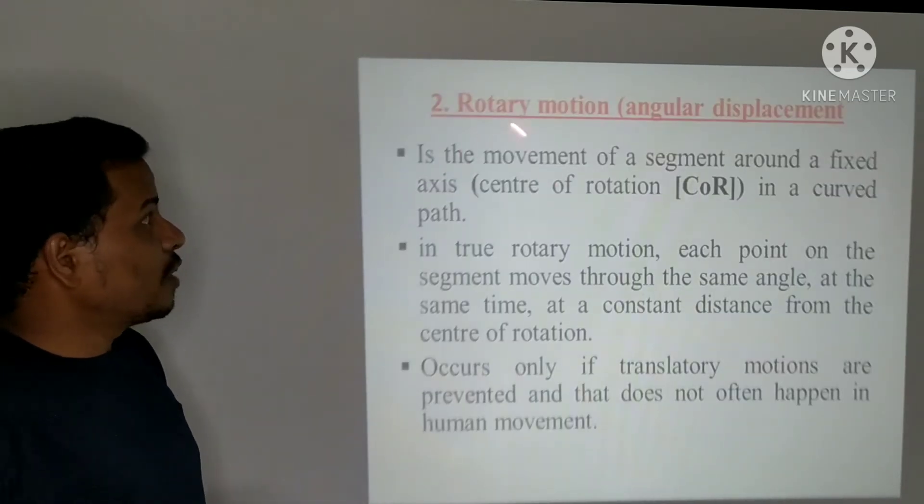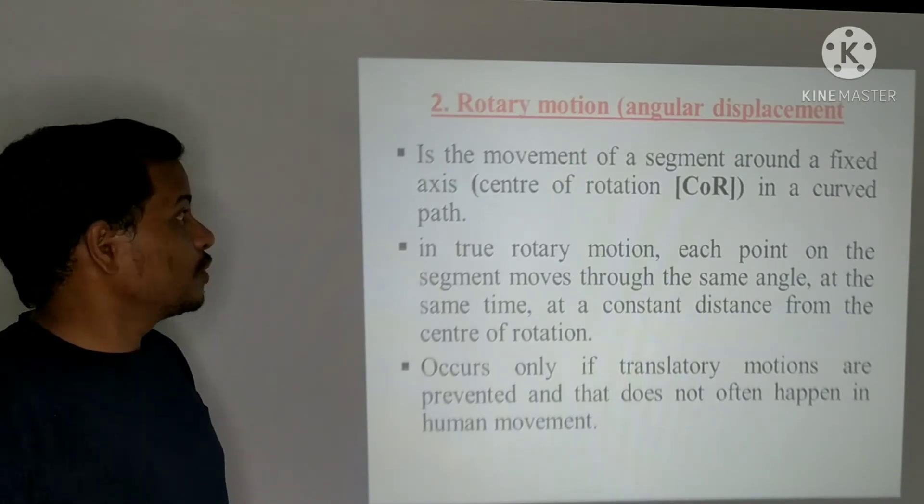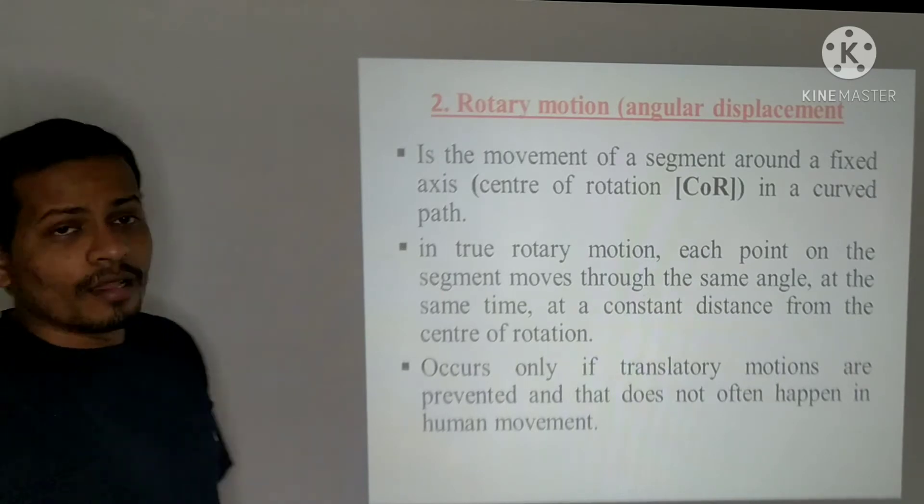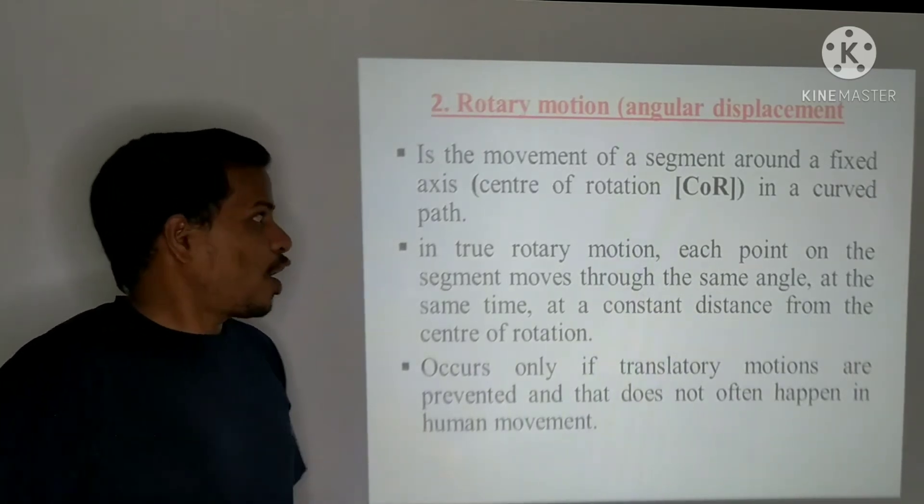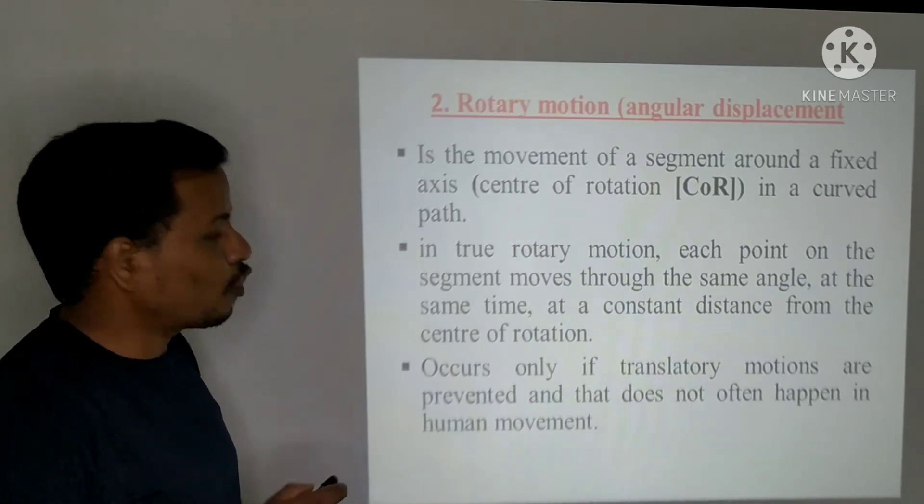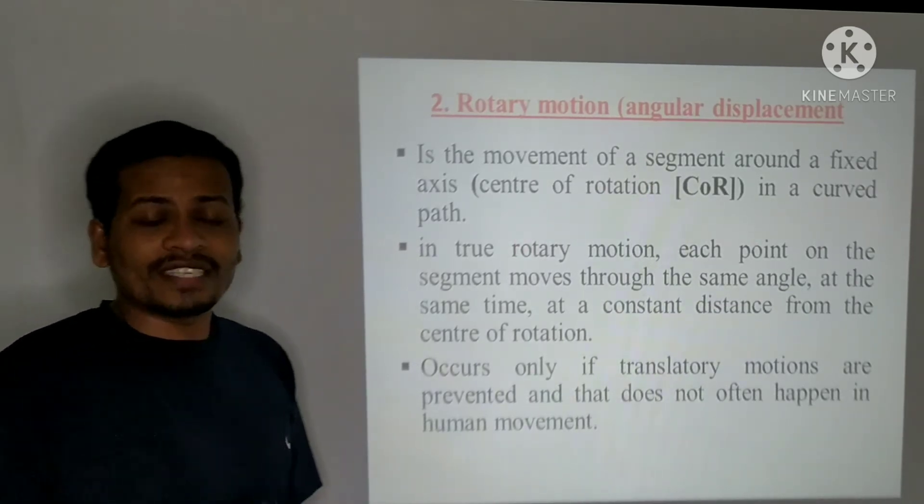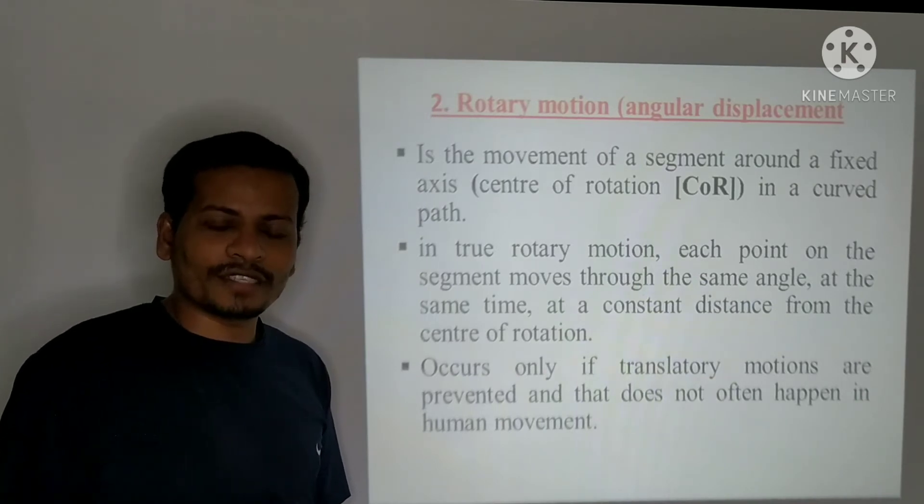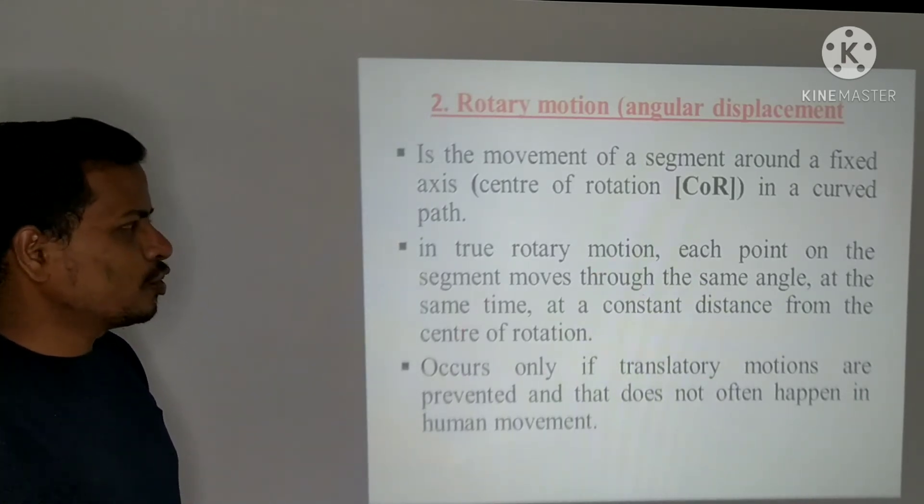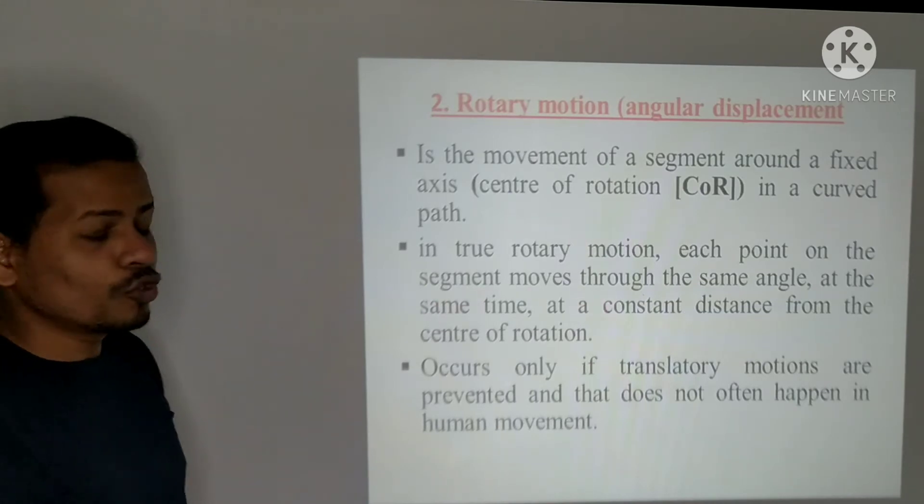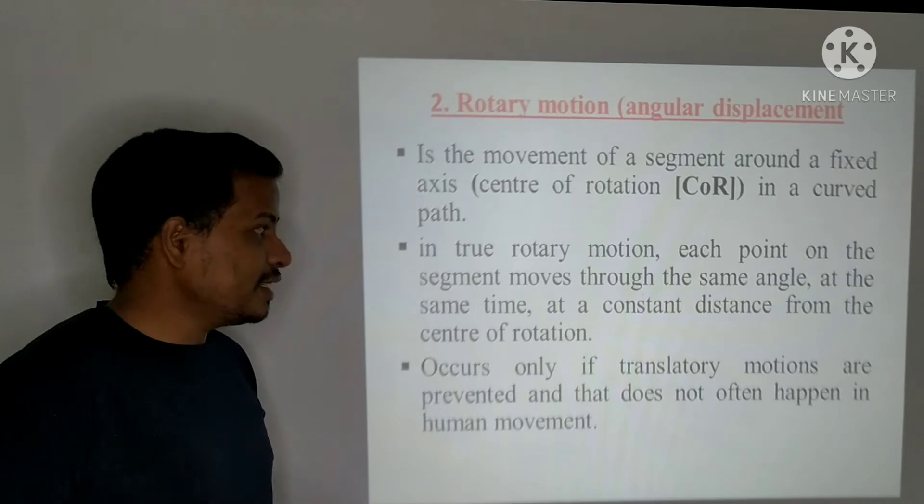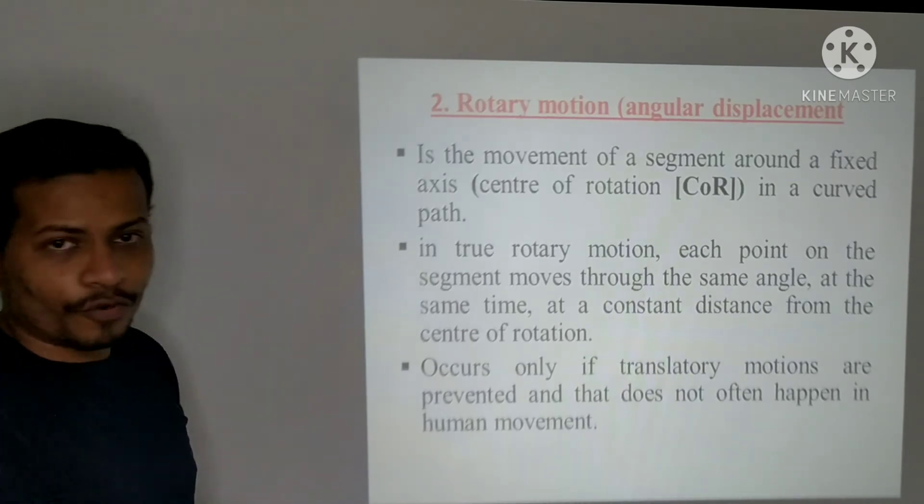Now let us see what is a rotatory motion which is also known as angular displacement or angular motion. It is a movement of a segment around a fixed axis which is known as center of rotation in a curved path. Whereas the translatory motion is a straight line. In a true rotatory motion, each point on the segment moves to the same angle at the same time at a constant distance from the center of rotation.